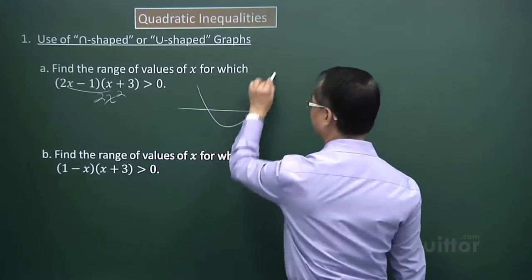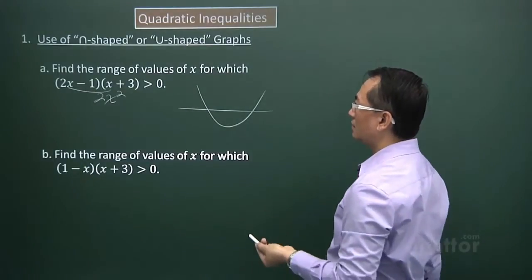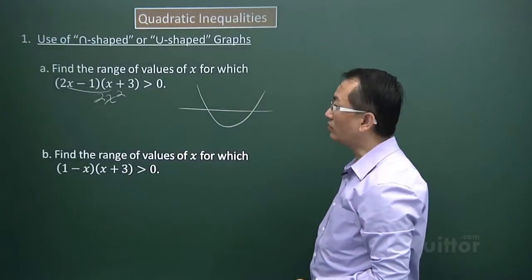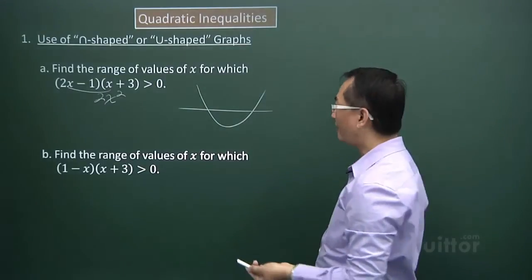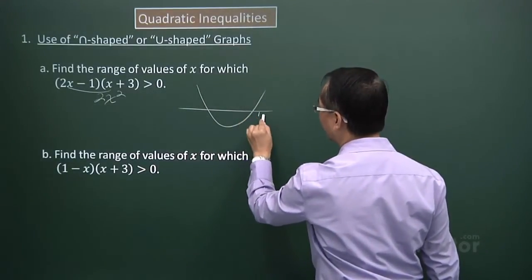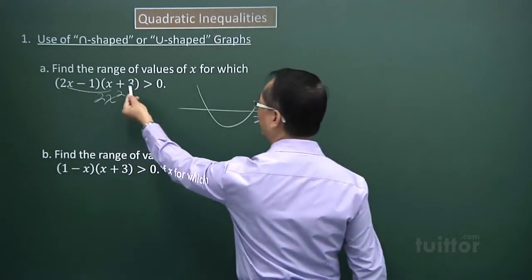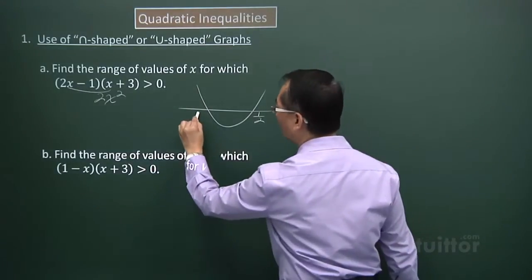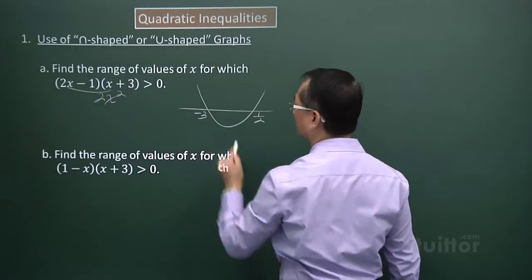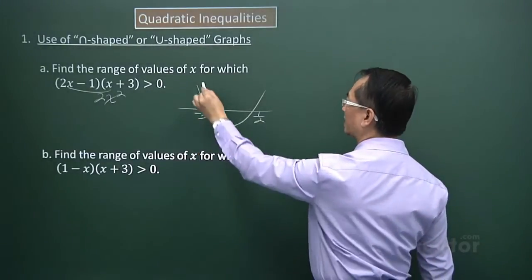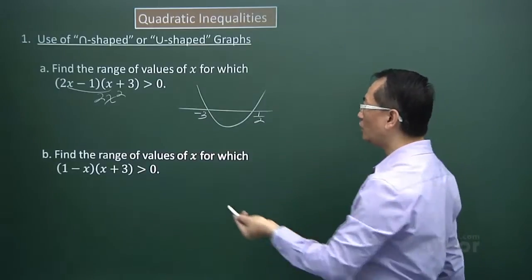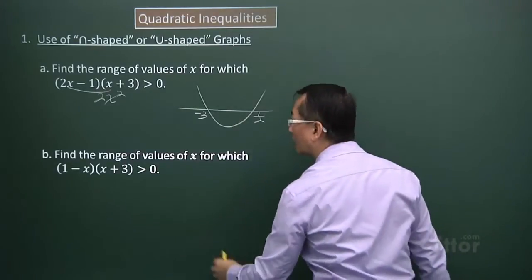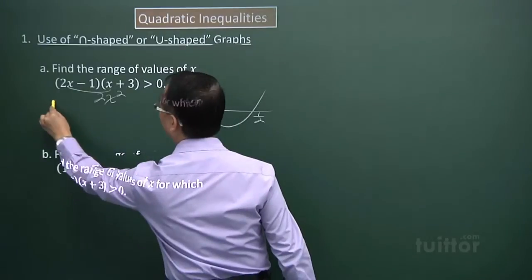For the first factor, 2X minus 1 equated to zero gives X equals one half, so I have this point here at one half. For the second factor, equated to zero I get X equals negative three, so that will be the point here. The two points where the curve cuts the horizontal line will be negative three and one half.